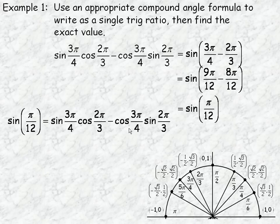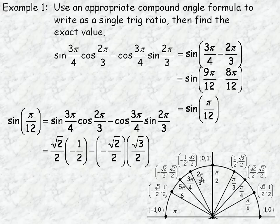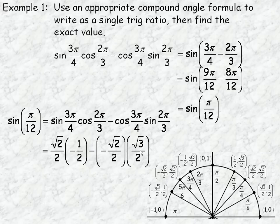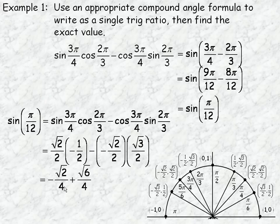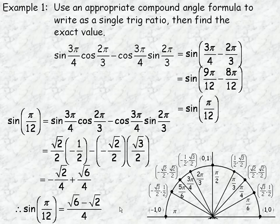So we're finding the exact value of sine(pi/12) using this expression. From the unit circle: sine(3pi/4) = root 2 over 2; cosine(2pi/3) = negative 1/2; cosine(3pi/4) = negative root 2 over 2; sine(2pi/3) = root 3 over 2. Expanding the products: root 2 over 2 times negative 1/2 gives negative root 2 over 4, and negative root 2 over 2 times root 3 over 2 gives plus root 6 over 4 (two negatives). With a common denominator, sine(pi/12) = (root 6 minus root 2) over 4.